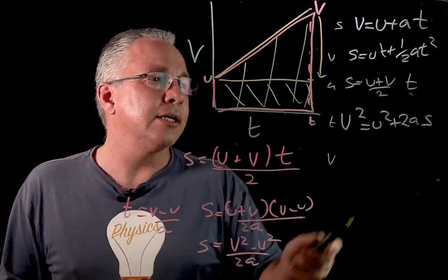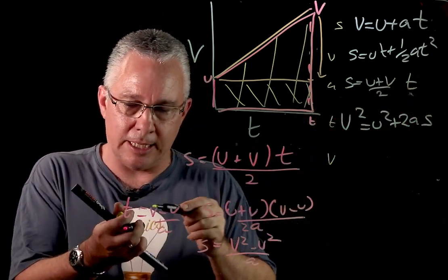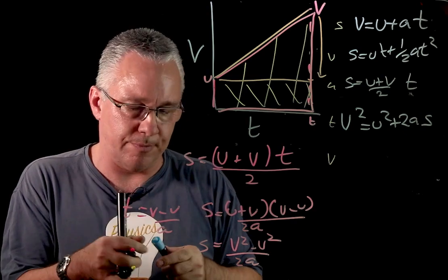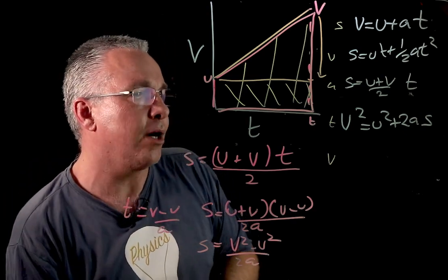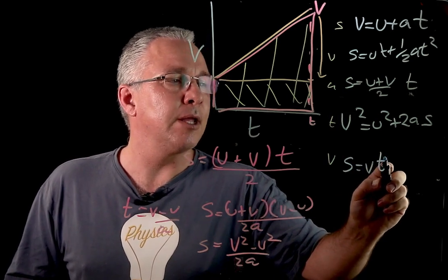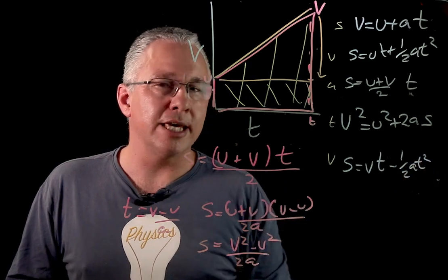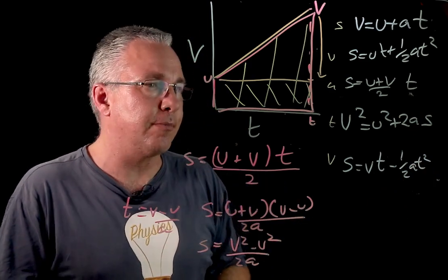Well, if you do the math, do the simple arrangement, you end up getting an equation of motion that looks very similar to that second equation of motion. And that second equation of motion is simply s, looks the same. Now we have vt minus a half at squared. So there's our fifth equation of motion.